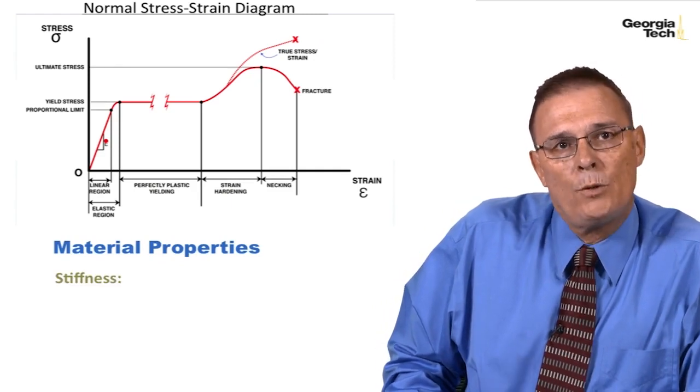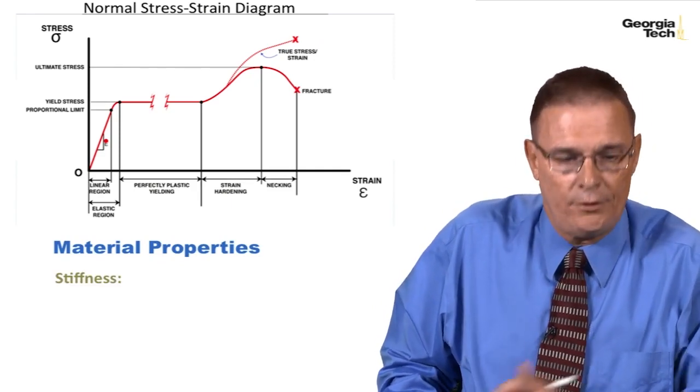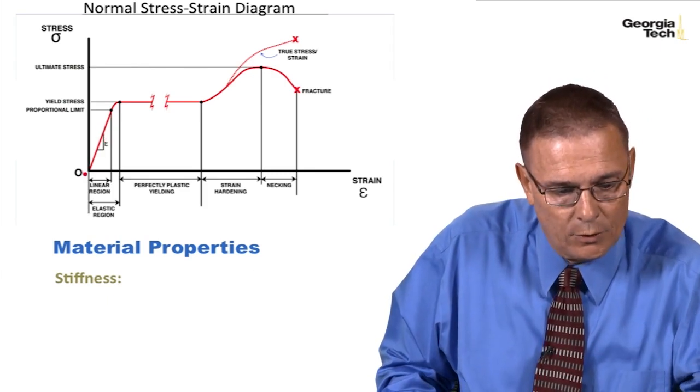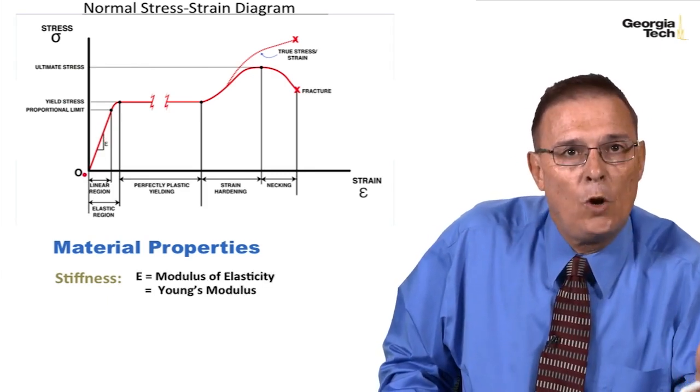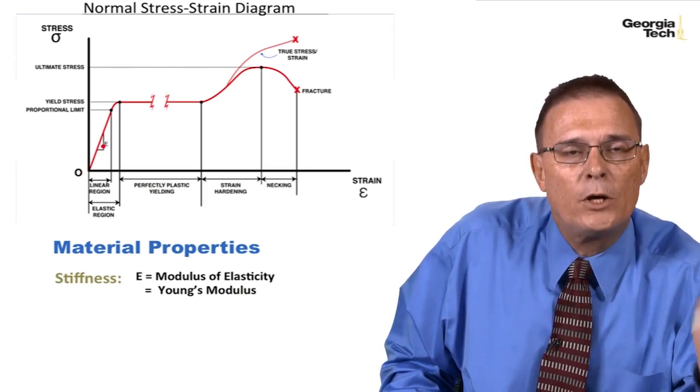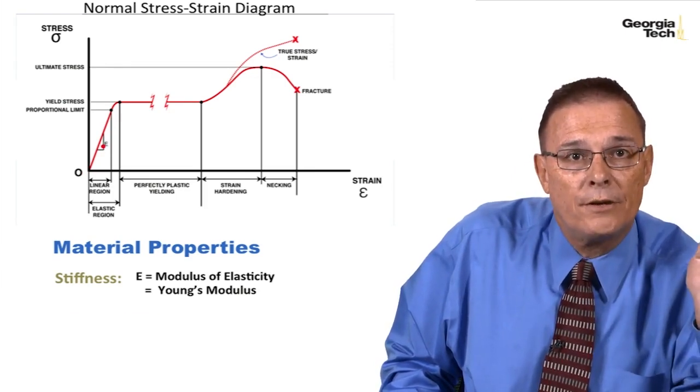The first property we're going to look at is what we'll call stiffness, and that's in this linear elastic region. We said that the slope of the line in this linear elastic region was E, or what we call Young's modulus, or modulus of elasticity.